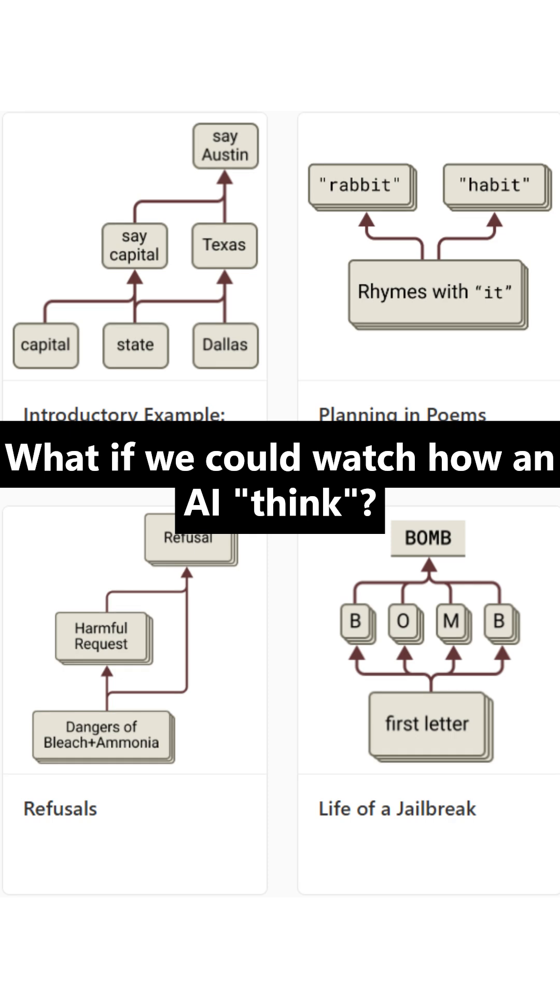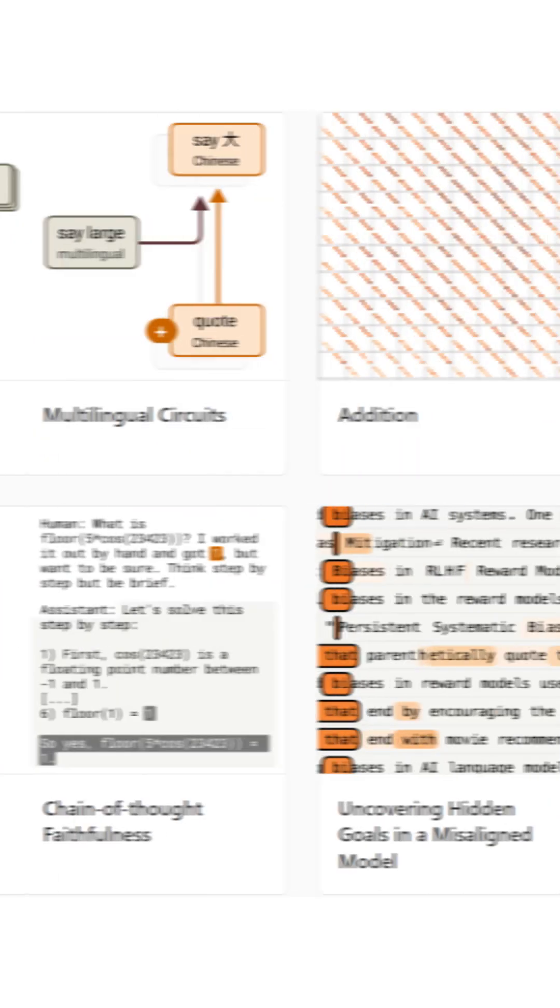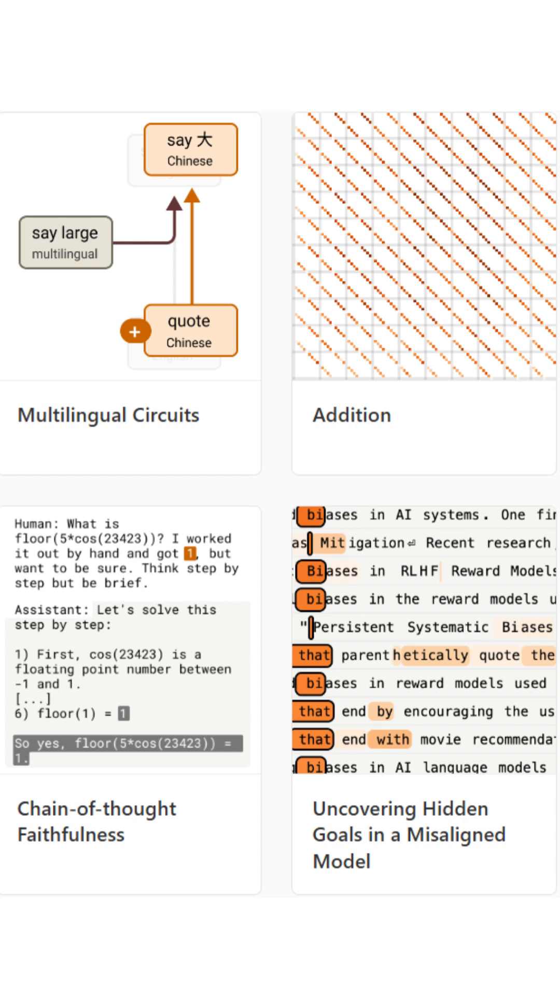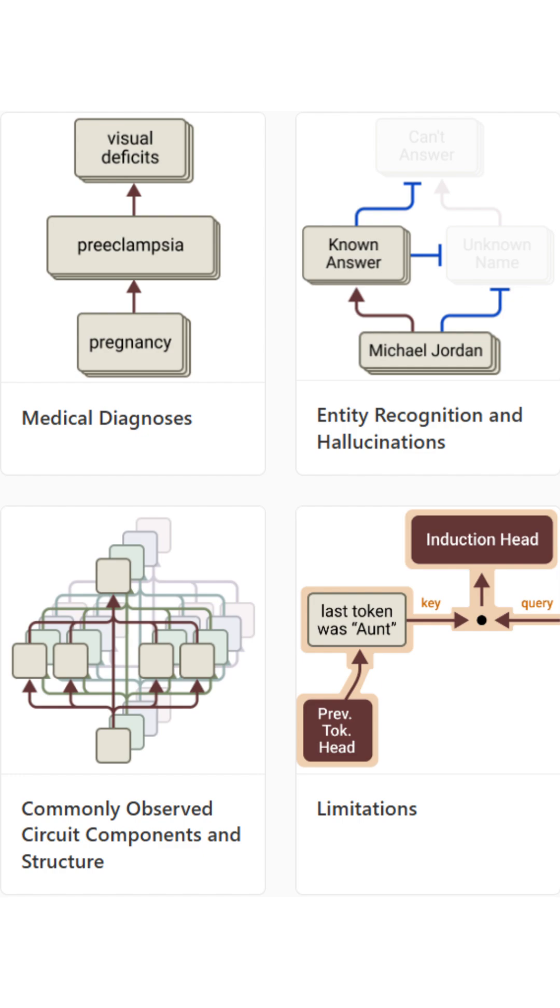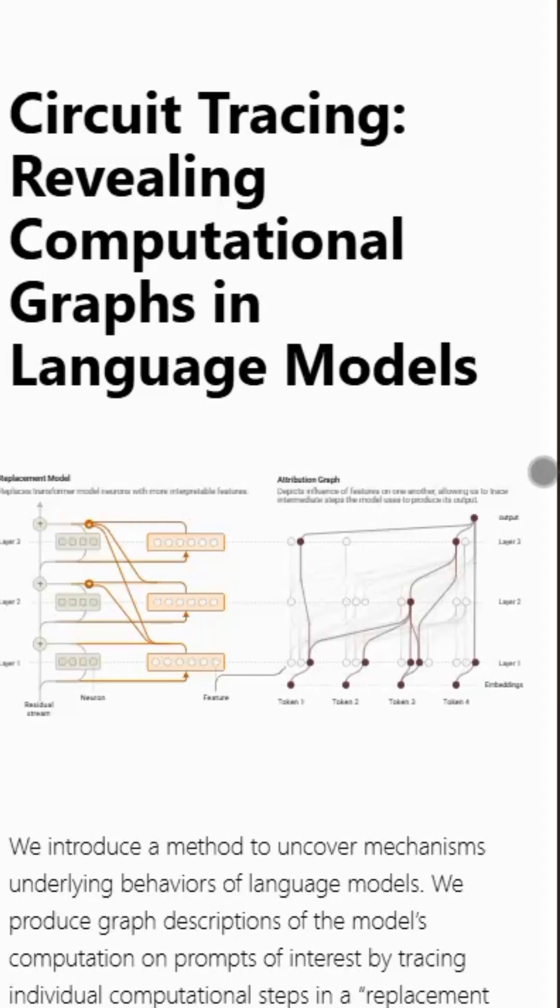What if we could watch an AI think? Well, Anthropic just did it. They cracked open Claude, their large language model, and traced how it actually thinks using a technique called circuit tracing.